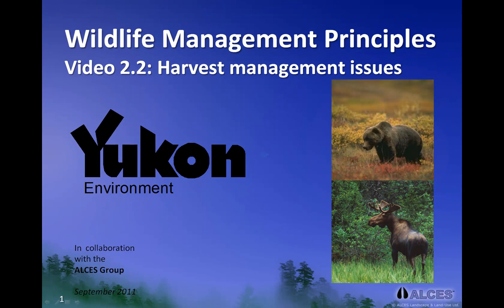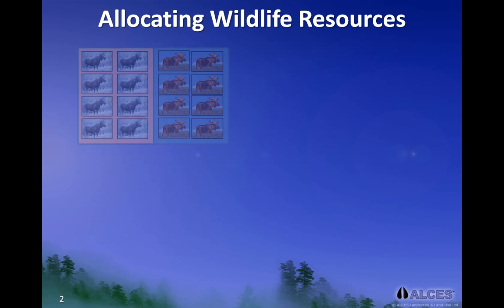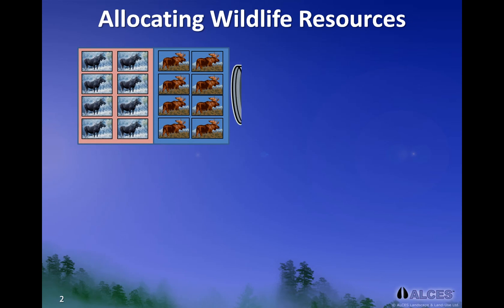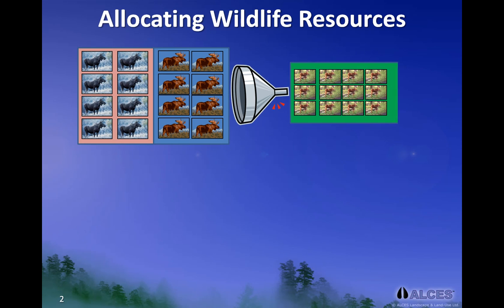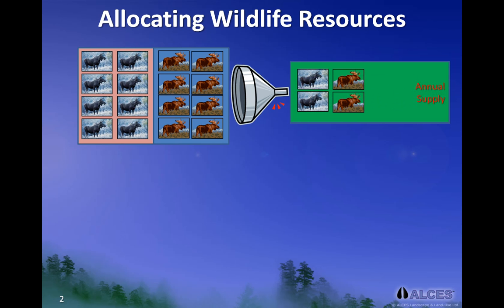The challenge of developing sustainable harvest strategies requires an understanding of many important and interrelated pieces of information. For example, if we were considering harvest strategies for moose, we would need to know how large the population is, the number of calves born each year, and recognize that only some of the calves born would survive to yearlings. We would need to know the number of yearlings surviving to young adults, and in turn this would influence the number of animals that may be available as an annual supply for harvesting.